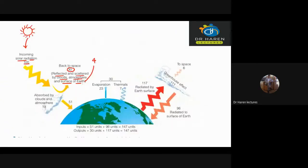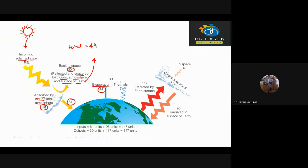Here, 19 units are absorbed by the cloud and atmosphere, and 30 units are reflected — totaling 49. The remaining is 51 units of solar radiation. Of these, 23 units of water are used for evaporation.